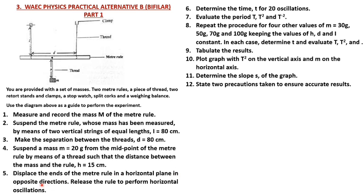Displace the end of the meter rule in a horizontal plane in opposite directions, release it, perform horizontal oscillations, and determine the time T for 20 oscillations. Evaluate the period T, T squared, and T inverse. Repeat the procedure for four other values of m: 30 g, 50 g, 70 g, and 100 g, keeping h, D, and L constant. L remains 80 cm, D remains 80 cm, and the thread holding the mass to the meter rule stays at 15 cm.